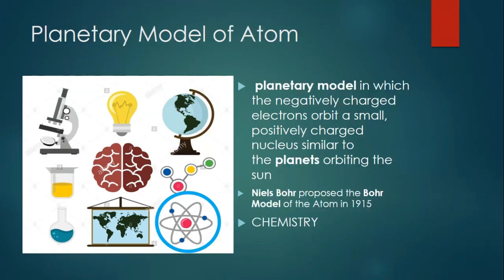And the last one is planetary model of atom. Planetary model in which the negatively charged electrons orbit a small positively charged nucleus similar to the planets orbiting the sun. It was proposed by Niels Bohr on the year 1915. The full discussion of this planetary model of atom will be in your chemistry subject.